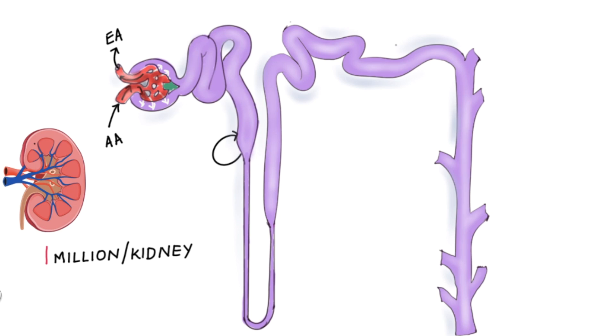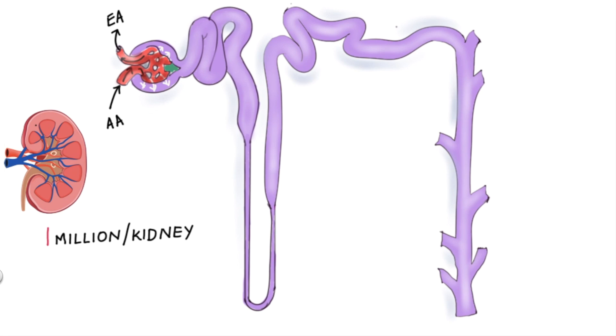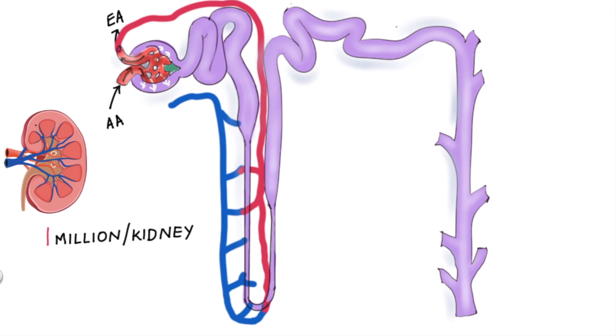For the most part, filtrate is reabsorbed back into the blood at several locations along the tubule. But how does reabsorption occur? Well, the efferent arteriole doesn't just end there. It branches out to form capillaries which surround the tubules of the nephron. Reabsorption is the movement of substances out of the tubules across the surrounding interstitial fluid into the blood of the capillaries.